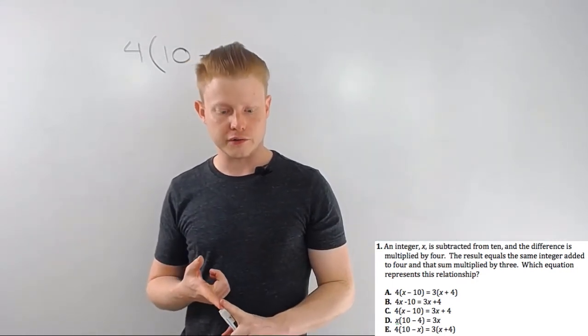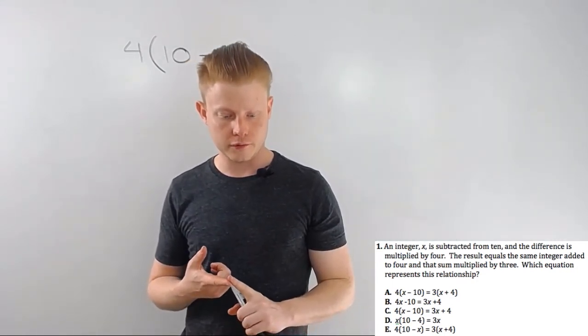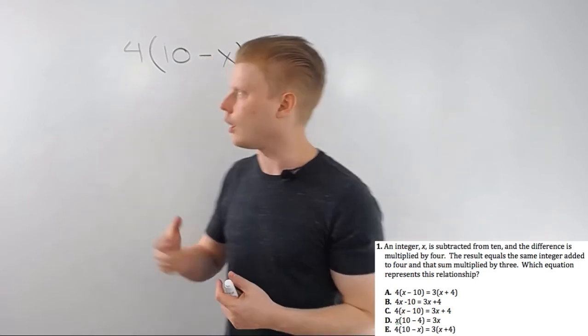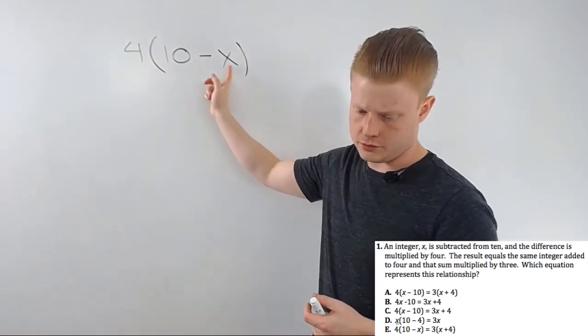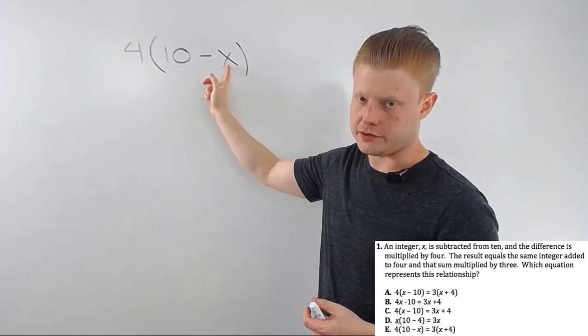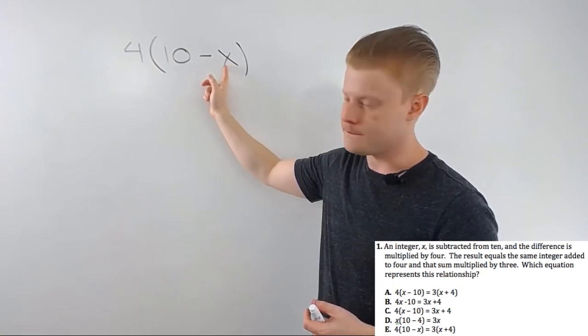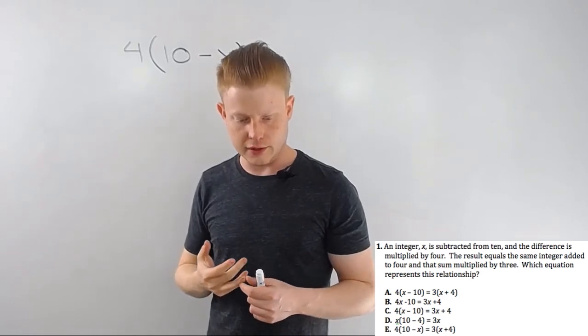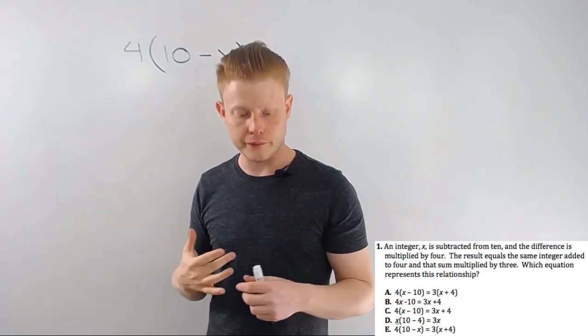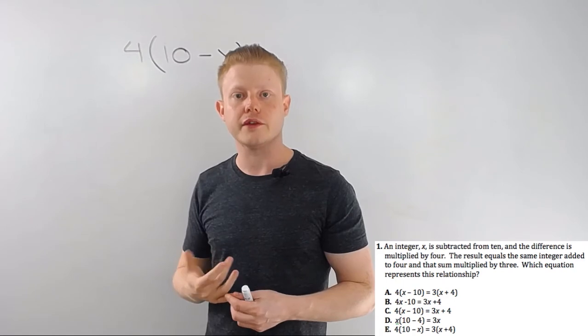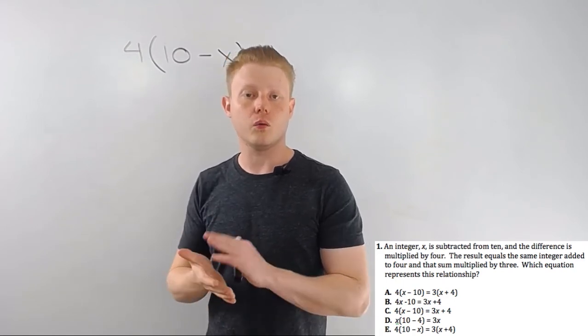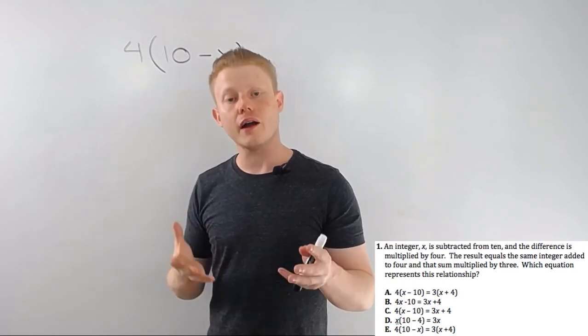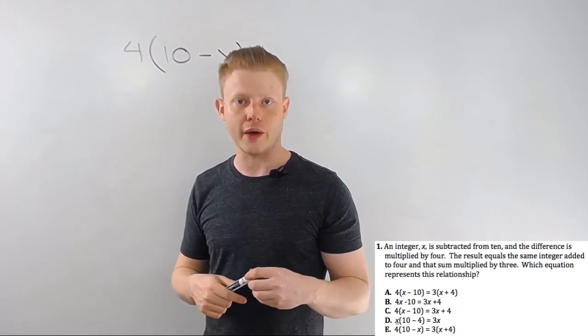A you know is wrong because x and 10 are backwards. B is wrong. Now, we could distribute this, right? But it's backwards. C is backwards. D, I don't know where that came from. And E is the only one that fits. So right there, we know E has to be correct. A lot of times these problems will work that way. You don't have to necessarily finish them out.